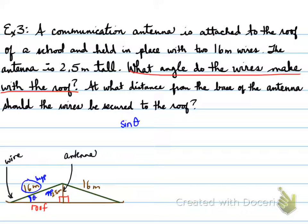Sine of the angle, theta, is equal to 2.5 over 16. Take the inverse because we're looking for an angle. Well, sine inverse of 2.5 over 16 turns out to be 8.9893 degrees. So it's a very small angle that this wire makes with the roof.